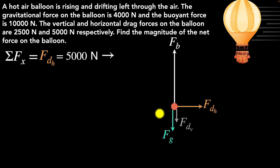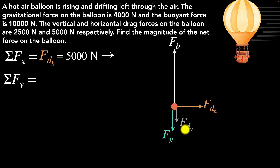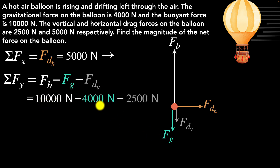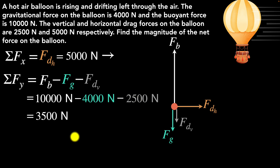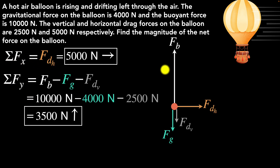Now for the net force in the y direction, let's choose upwards as positive. So the buoyant force is positive, while gravity and the vertical drag are negative. Plugging in: 10,000 minus 4000 minus 2500 gives 3500 newtons. Since it's positive, the net force in the y direction is 3500 newtons upward — which makes intuitive sense, as the buoyant force of 10,000 is larger than the combined downward forces of 6500 newtons. So we have the net force in the x direction and the net force in the y direction.